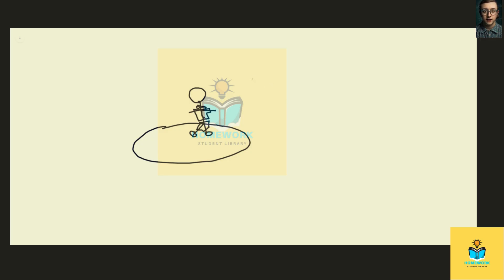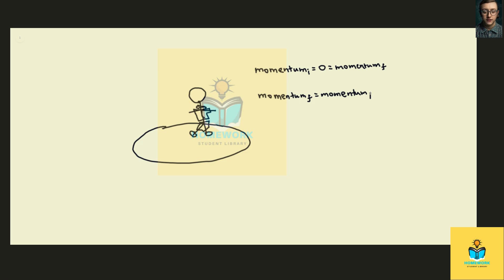There are two different ways that you can do this. The first way will be by throwing your clothes. The initial momentum would be zero, and it would have to be equal to the final momentum, which is composed of the momentum from the person plus the momentum from the clothing. Since final momentum equals initial, which equals zero, the momentum of the person is equal to the opposite of the momentum of the clothing.